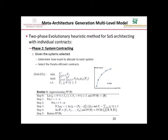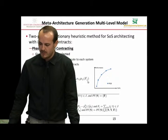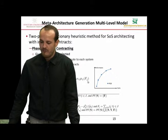Let's look at how we solve this problem. This is a multi-level problem, and even the simplest multi-level optimization problems are very complex to solve. Therefore, heuristic methods are generally used, and we use an evolutionary heuristic method for solving SOS architecting with individual contracts. The algorithm has two phases: phase one is system selection — which systems should be in the SOS — and phase two is system contracting — how to build contracts with the selected systems. We first solve phase two to decide on contracts, then use those contract decisions to inform which systems to select.